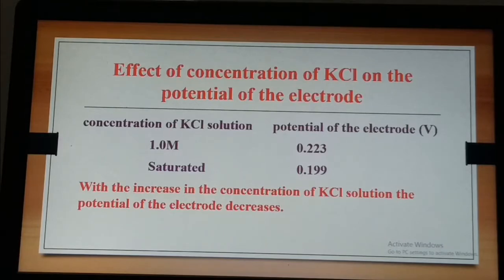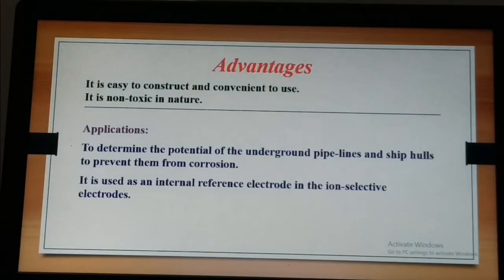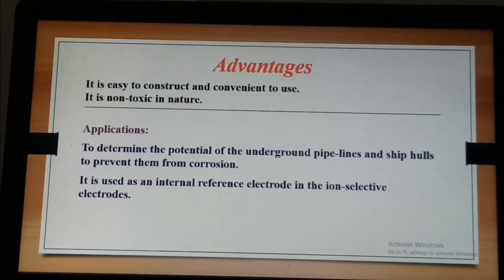The effect of KCl concentration on the potential of the Ag/AgCl electrode follows the same trend: with increasing KCl concentration, the potential decreases. At 1 M KCl the potential is 0.223 V, whereas saturated KCl gives 0.199 V. The advantages are significant: the Ag/AgCl electrode is non-toxic, very easy to construct, and convenient to use. It finds wide applications in electrochemical corrosion studies to determine the potential of underground pipelines and ship hulls, and is also used as an internal reference electrode in all ion-selective electrodes.